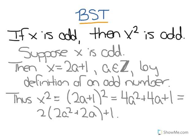From that we must know that x squared equals (2a + 1) squared, which equals 4a² + 4a + 1. And then if you factor out a 2, it equals 2(2a² + 2a) + 1.